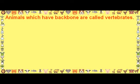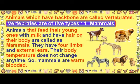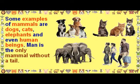Animals which have a backbone are called vertebrates. Vertebrates are of five types. The first type is mammals. Animals that feed their young ones with milk and have hair on their body are called mammals. They have four limbs and external ears, and their body temperature does not change, so mammals are warm blooded. Some examples of mammals are dogs, cats, elephants, and even human beings. Man is the only mammal without a tail.